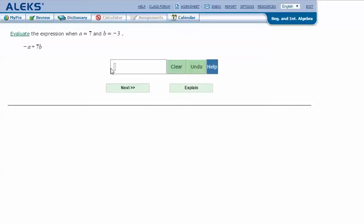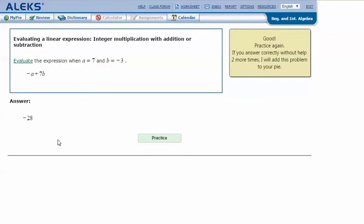In my ALEKS screen, type in the answer that I got in my notes: negative 28. And click Next. And it says that I got the correct answer. Thanks for watching.